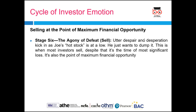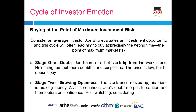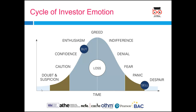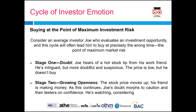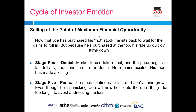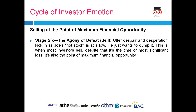This is when most investors sell, despite it being the time of most significant loss. The majority of investors go through this cycle. What is important to understand is that you need to buy at the point of maximum financial opportunity — either at the beginning of the uptrend or when the stock is at a low. That depicts the cycle of investor emotion and how you can avoid these types of emotions to make a reasonable profit in the markets.